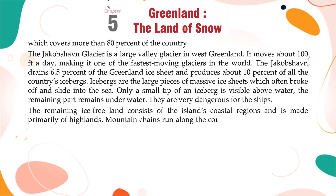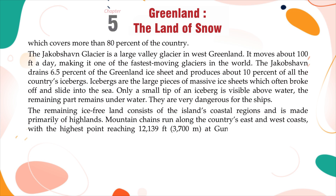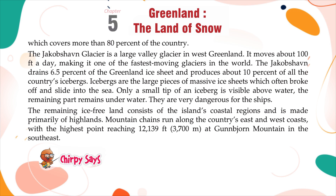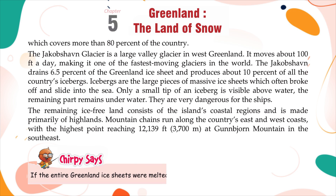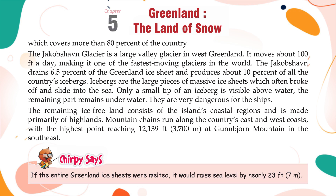The remaining ice-free land consists of the island's coastal regions and is made primarily of highlands. Mountain chains run along the country's east and west coasts, with the highest point reaching 12,139 feet (3,700 meters) at Gunnbjørn Mountain in the southeast. If the entire Greenland ice sheet were melted, it would raise sea level by nearly 23 feet, i.e., 7 meters.